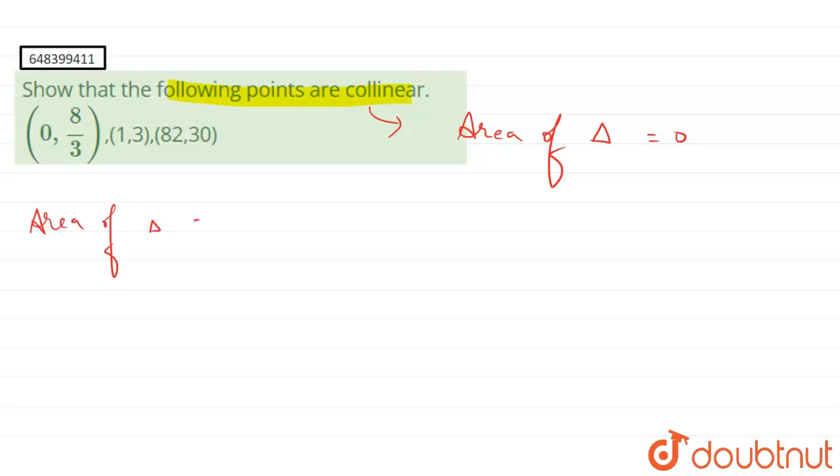Let's find out the area of triangle. Its formula is half of the determinant of x1, y1; x2, y2; and x3, y3.